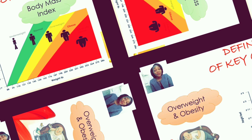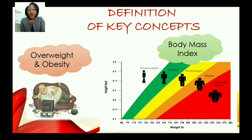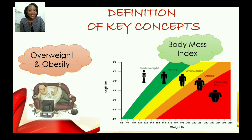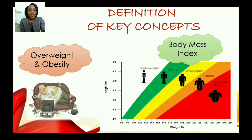In order for us to fully understand what is taking place, we have to define these concepts. We're going to look at a definition for overweight and obesity, and also a definition for Body Mass Index, properly known as BMI.